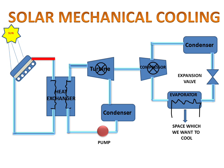This is the basic diagram of the Solar Mechanical Cooling System. Now we will see the animation. The sun sends radiation to the flat plate collector. This flat plate collector heats the water, and this heated water goes through the pipe into the heat exchanger.